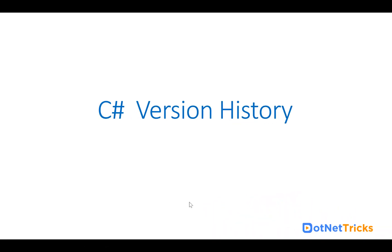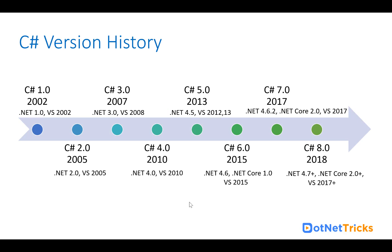Now let's have a look at C# version history — how many versions have been released so far. C# 1.0 was released in 2002 with .NET Framework 1.0 and Visual Studio 2002. C# 2.0 was released in 2005 with .NET Framework 2.0 and Visual Studio 2005. C# 3.0 was released in 2007 with .NET Framework 3.0 and Visual Studio 2008. C# 4.0 was released in 2010 with .NET Framework 4.0 and Visual Studio 2010.